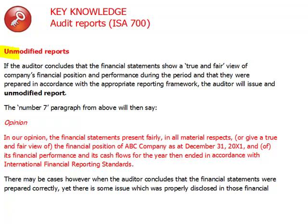First we will discuss something that all companies would wish to get: the unmodified report. An unmodified report is when the auditor can safely say that the financial statements show a true and fair view — all transactions were properly recorded and reported in accordance with relevant accounting standards, for example IFRS. If after the audit everything was as expected and the managers did the job the way they should have, the opinion will say the financial statements present fairly in all material respects. This is the standard line, and in the majority of cases this is how the audit ends.